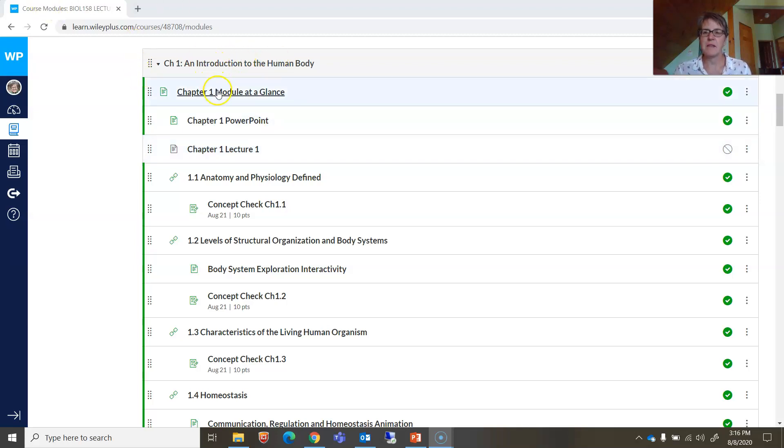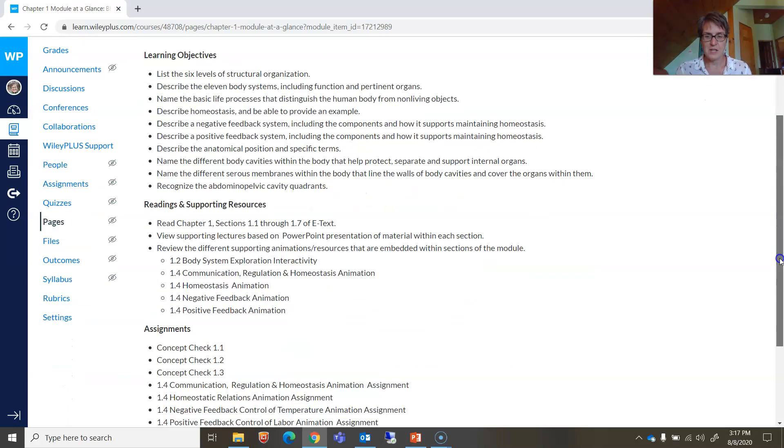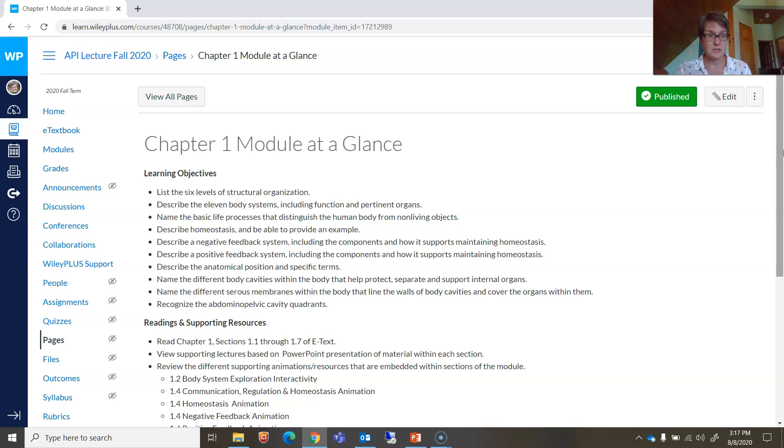I've jumped on to Wiley Plus and I'm in the first module. I'm not going to do this every time, but just so you kind of know, in the back of my mind when I instruct, you want to be answering these learning objectives. Chapter one module at a glance, there's these learning objectives, the six levels of organization, the 11 body systems. We're going to do a few in this first recording and then separate recordings for more.